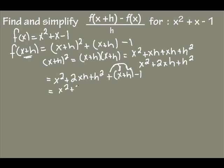So I'm going to have x squared plus 2xh plus h squared plus x plus h minus 1. My last step is to simplify, but unfortunately none of these are like terms, so f of x plus h equals this big long guy.